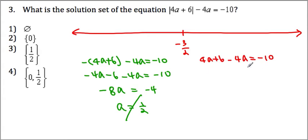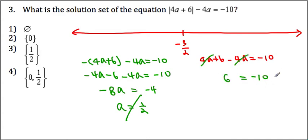For the second case, when you combine terms, we get 6 equals negative 10, which is not true. So in fact, we're not going to have any answers — empty set becomes our answer.